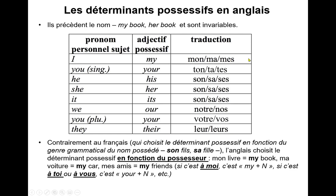My: mon, ma, mes. Your: ton, ta, tes. His: son, sa — c'est du moment que c'est à lui, avec un i comme dans 'lui'. Her: son, sa — c'est du moment que c'est à elle, avec un e comme dans 'elle'. Its: son, sa — c'est du moment que c'est à un objet ou quelque chose de non humain. Our: notre, nos. Your: votre, vos. Their: leur, leurs.